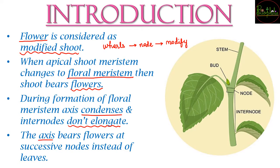Whatever axis the floral meristem has, that axis will have flowers instead of leaves. As mentioned, nodes generally bear leaves, but because of modification in the modified shoot which has become the floral meristem, instead of leaves, successive nodes will now bear flowers.